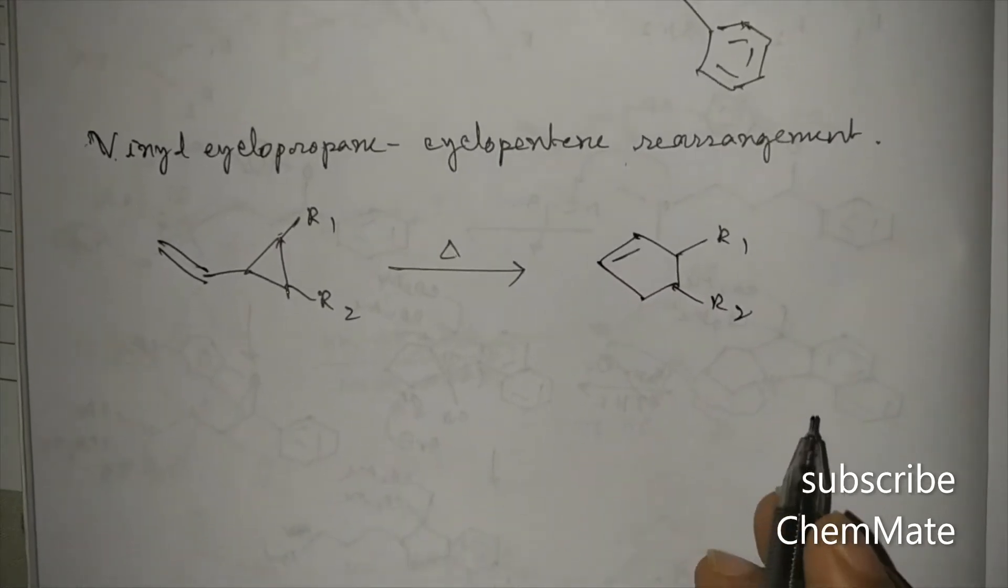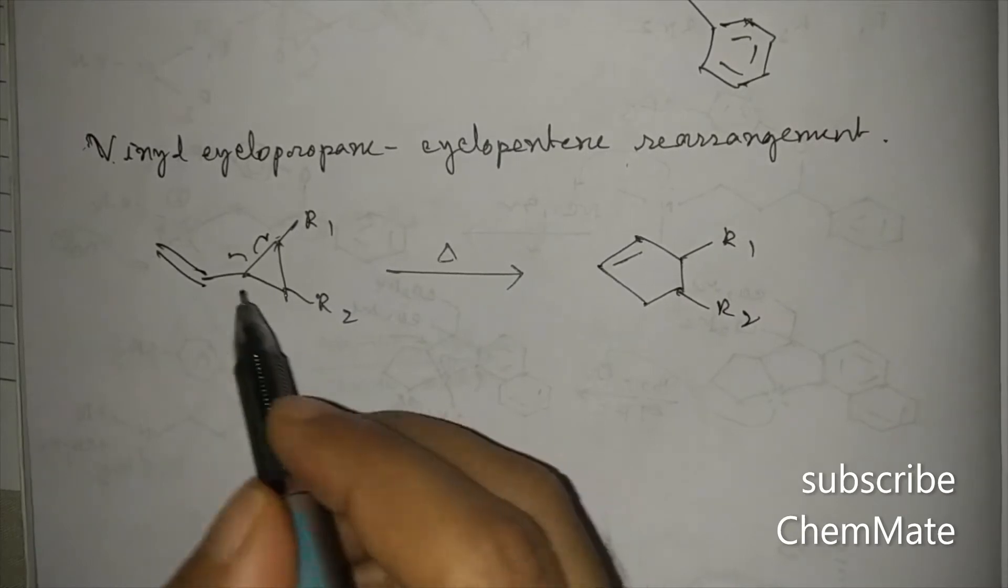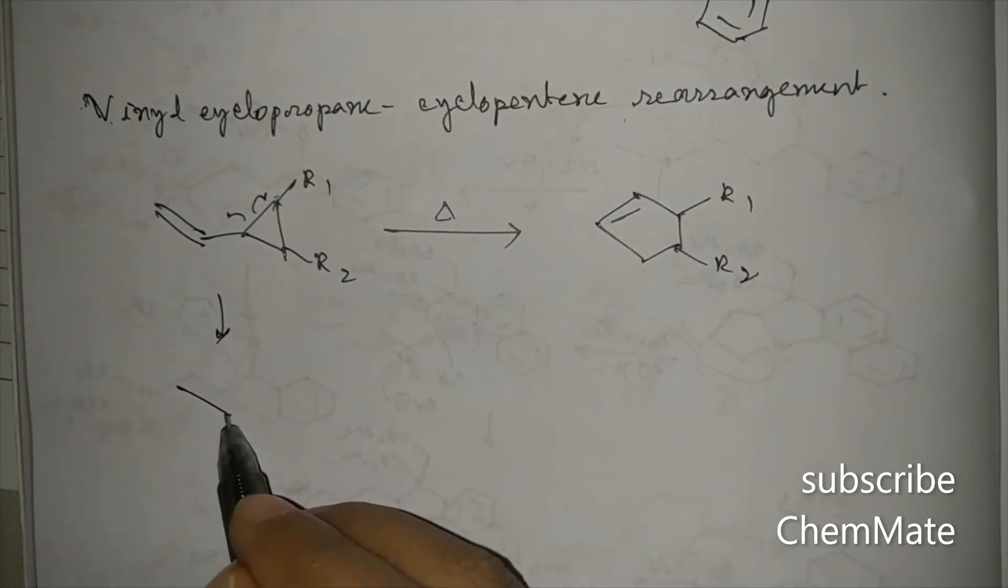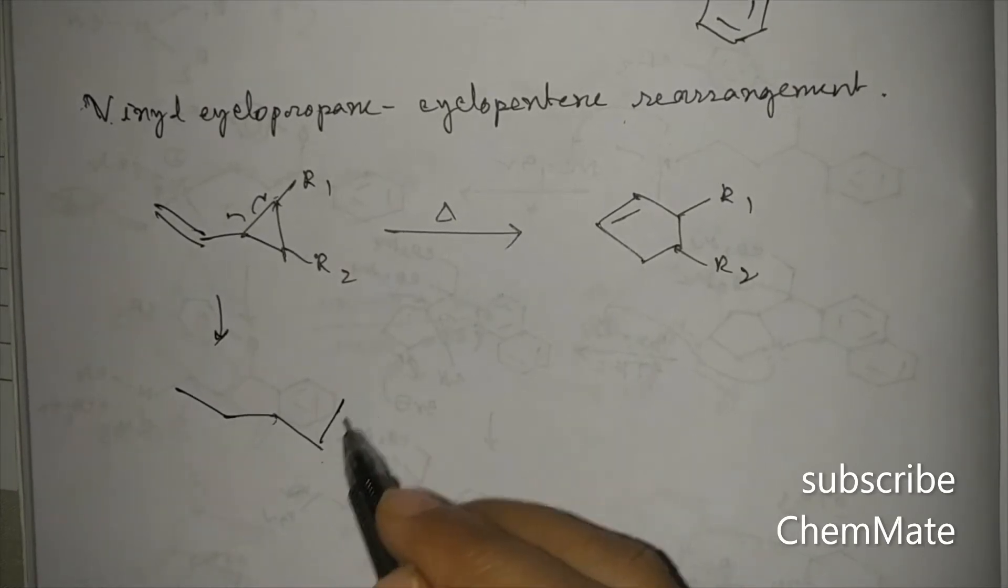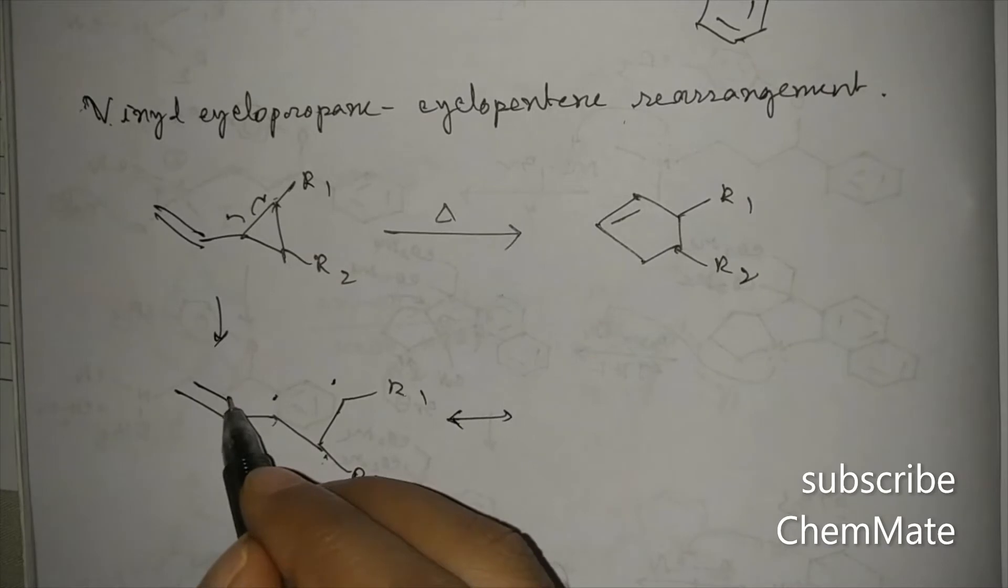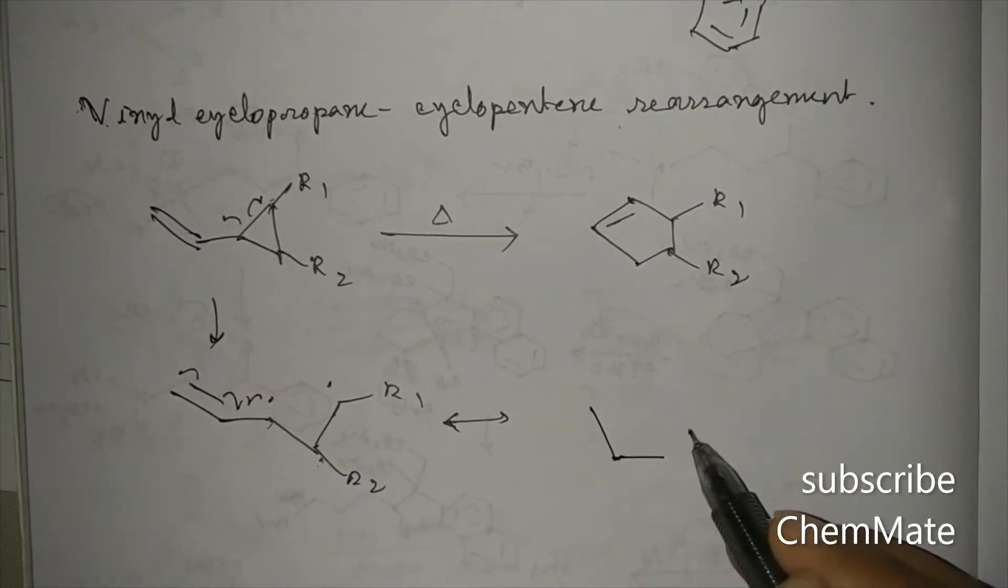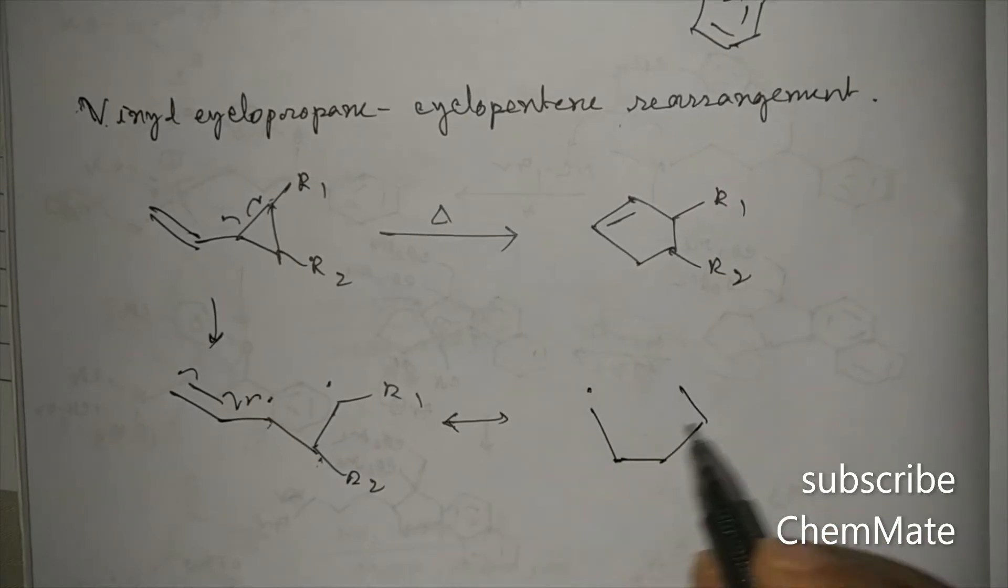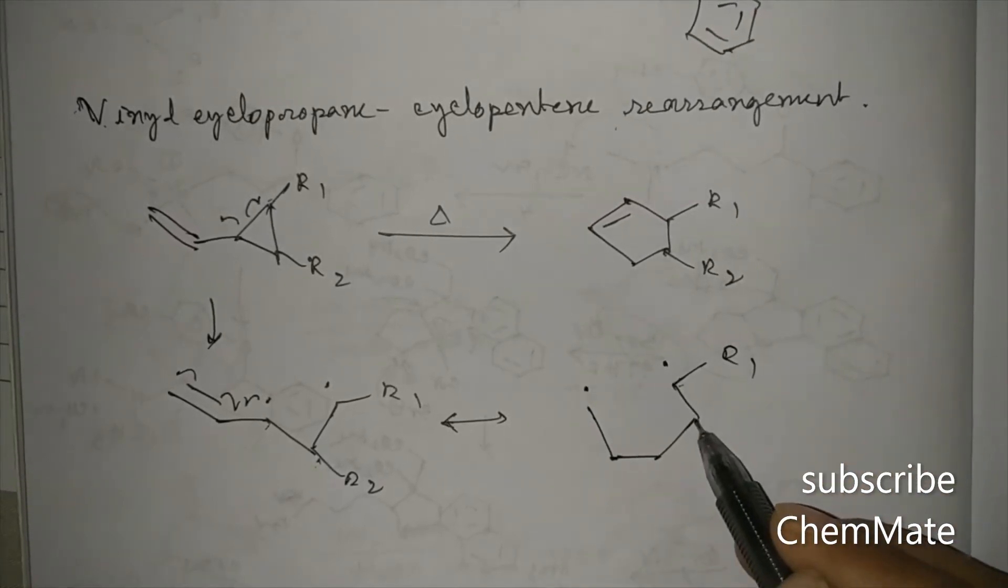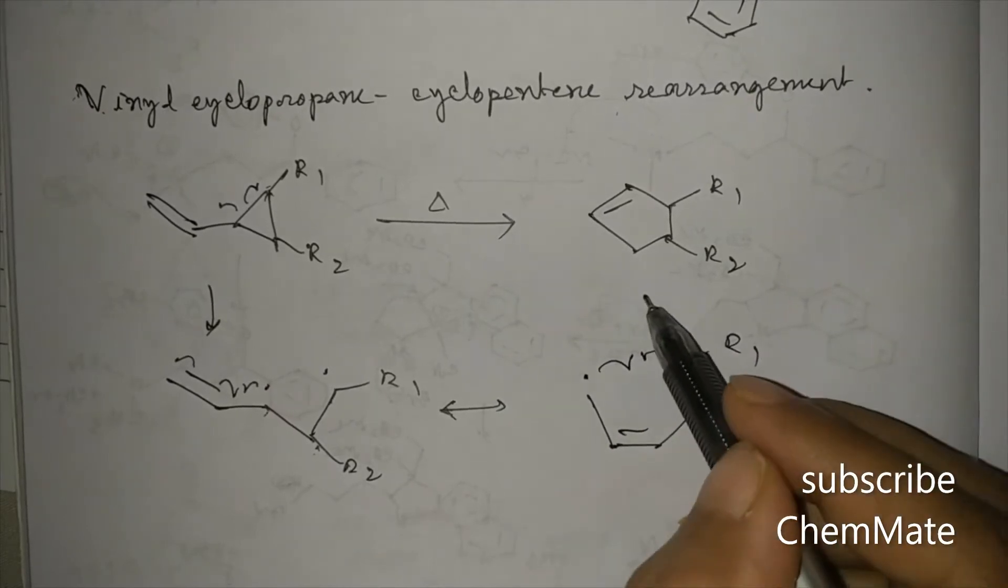like this. So if we see the mechanism, here ring cleavage will occur so that two radicals will form. This is R2, R1. Now this will rearrange, this vinyl radical will rearrange. Here will be the radical and another one is here, R1, R2, and the double bond will be here.